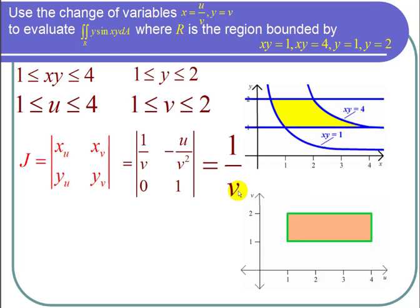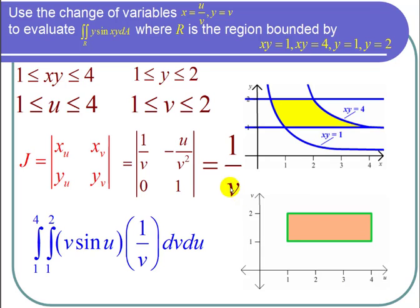So now I can put all this together into a double integral. The double integral over the region of xy sine of xy dA is a double integral from u going from 1 to 4 and v equals 1 to v equals 2. And then y was v and sine of xy, remember xy was u, so sine of xy is sine of u, times the Jacobian which is 1 over v, dv du.